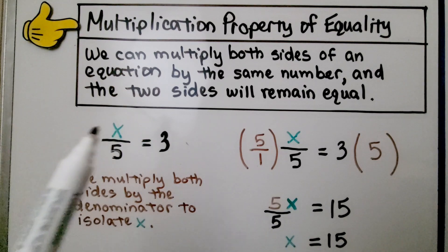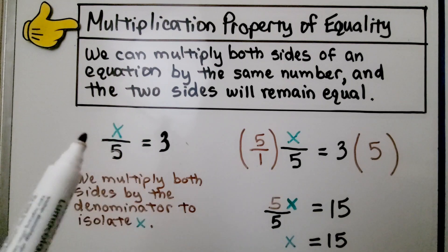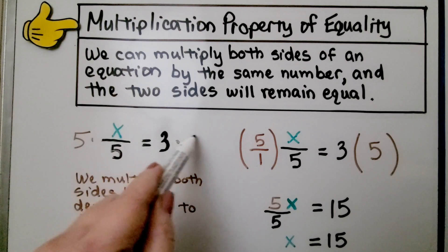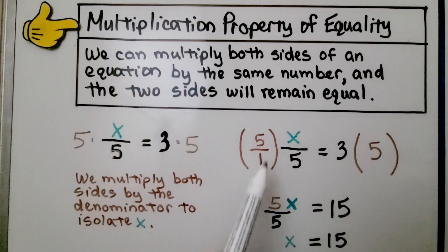We have x divided by 5 is equal to 3. We have division because of the fraction bar. So we multiply both sides by this denominator 5. We can write the 5 over 1 so it's easier to multiply straight across. We get 5x over 5 is equal to 15.